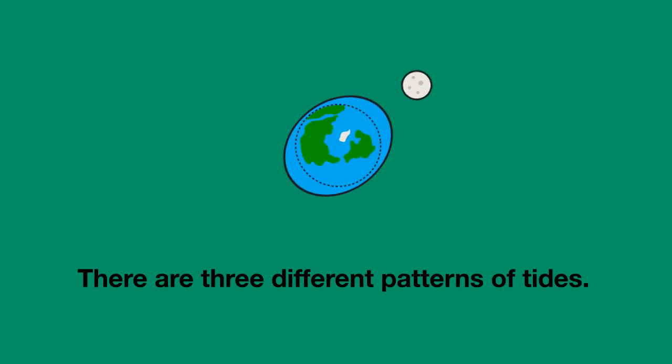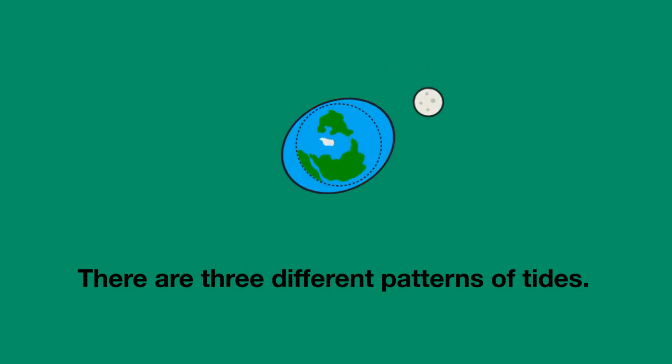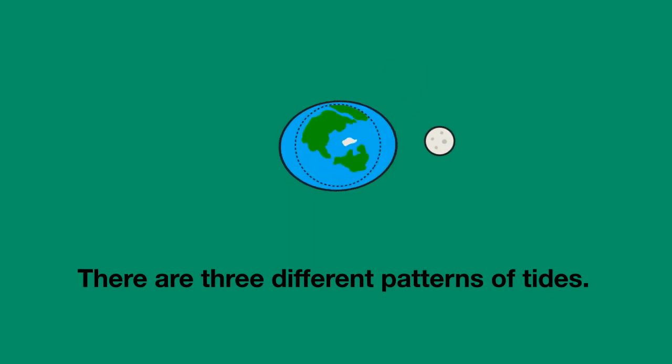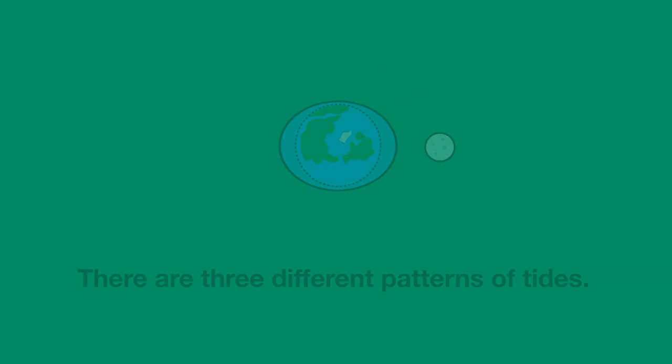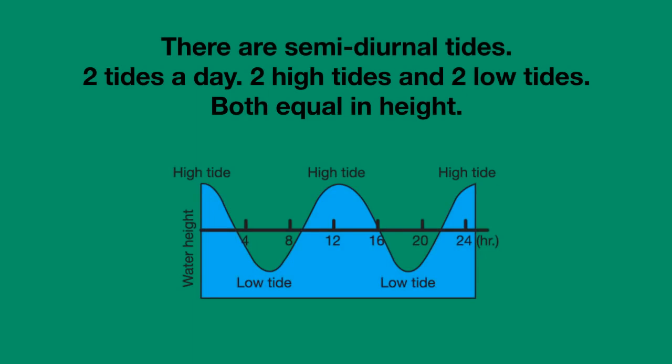In fact, there are three different patterns of tides. There are semi-diurnal tides. Semi-diurnal means half day, so twice daily. This is a pattern of two tides a day — two high tides and two low tides — and they're both equal in height.